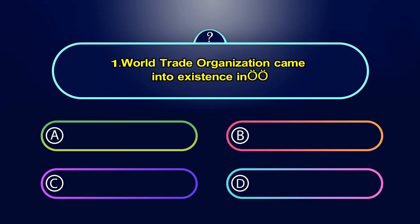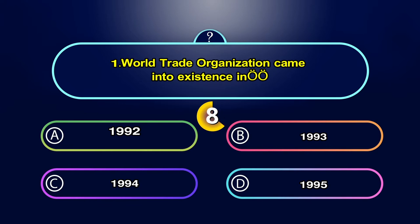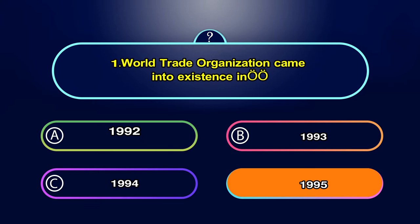World Trade Organization came into existence in: Option A. 1992, Option B. 1993, Option C. 1994, Option D. 1995. Your time starts now. The answer is D. 1995.